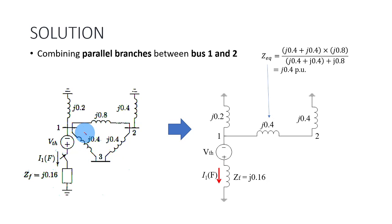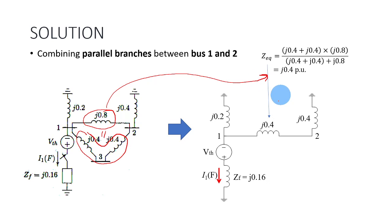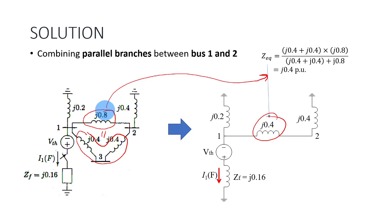In this case, as you can see, this J0.4 is in series with this Z0.4 — because there's nothing coming from bus number 3 here, so these two together are in series. You can combine them together with J0.8 in parallel. If you parallel them together using this formula, you get J0.4. So you simplify the three impedances into one: J0.2, J0.4, J0.4.